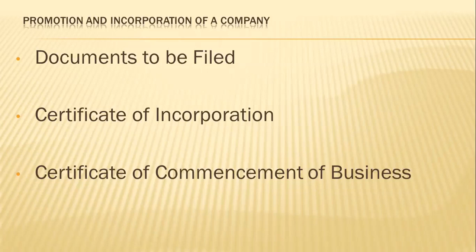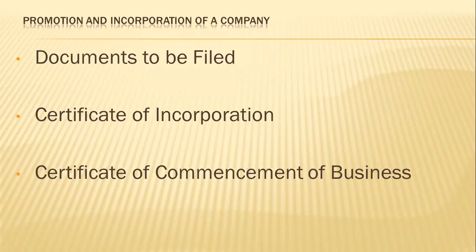On registration, the registrar will issue a certificate of incorporation, whereby he certifies that the company is incorporated. From the date of incorporation mentioned in the certificate, the company becomes a legal person, separate from its shareholders, and secures a perpetual succession. Hence it is the birth certificate of the company. The certificate of incorporation prevents the reopening of matters prior to the registration and places the existence of the company as a legal person beyond doubt. Consequently, if the seven signatures of a memorandum were written by one person or were all forged, the certificate would be conclusive that the company was duly registered. Similarly, if the signatories were all infants, the certificate would still be conclusive.